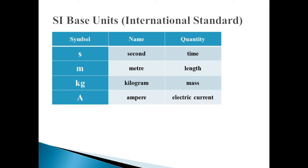For uniformity over the world, there is an international standard — the SI basic unit system. In this SI system, time is measured in seconds, length in meters, mass in kilograms (kg), electrical current in amperes (A), and temperature in degree Celsius. These are the international standard units used for engineering and mechanics problems.